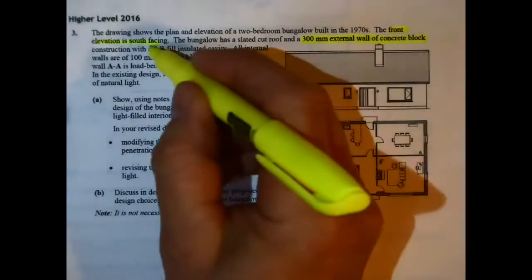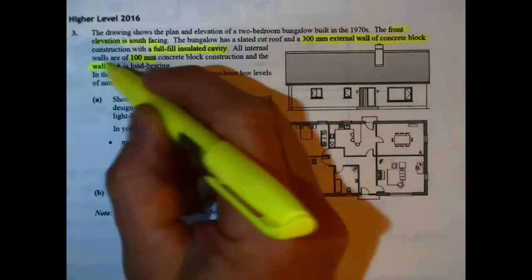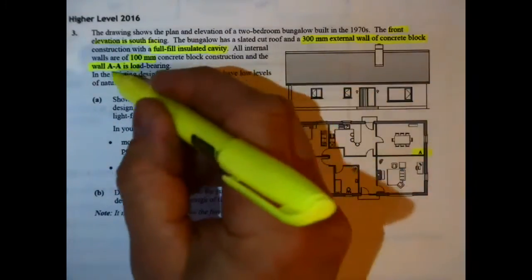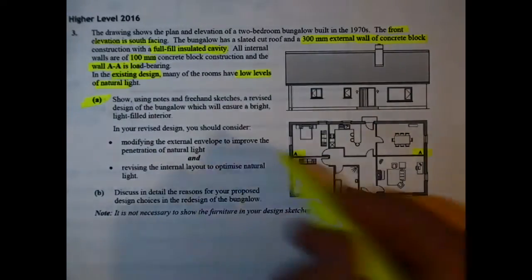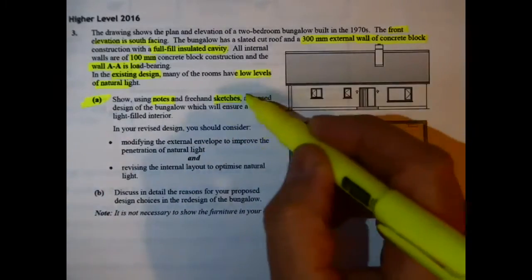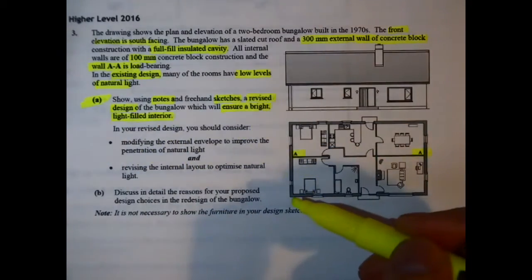There's a 100 millimeter concrete block load-bearing wall, and the existing design tells us that there's low levels of natural light getting into the building. So Question Part A asks us to use notes and sketches - it says it's 50-50 for your marks more or less - and ensure that bright light enters the building or penetrates into the building.